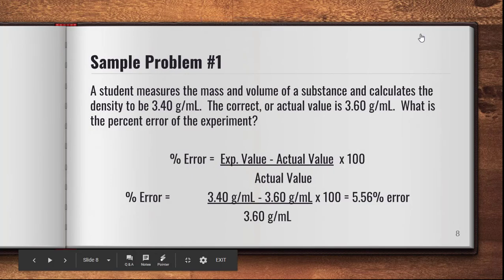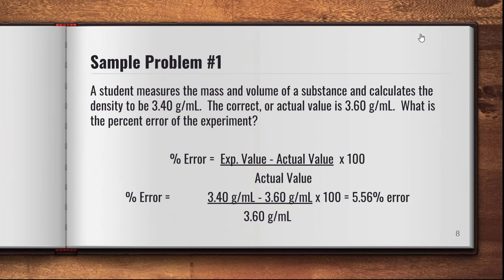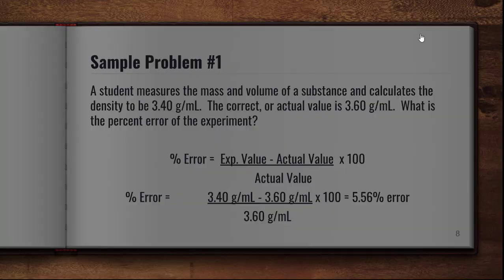Sample problem one: a student measures the mass and volume of a substance and calculates the density to be 3.40 g/mL. The correct value is 3.60 g/mL. What is the percent error? Plugging into the formula: (3.40 − 3.60) ÷ 3.60 × 100 = −5.56%. Because percent error is always positive, the answer is 5.56% error.